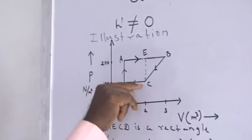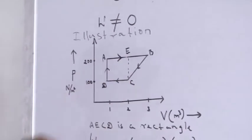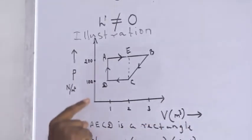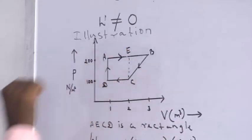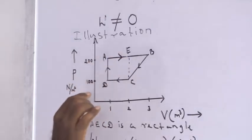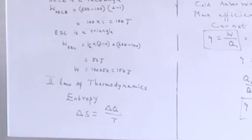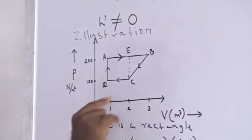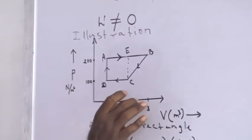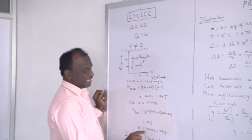I can identify that the path carried by this thermodynamic process forms a rectangle A-E-C-D and a triangle E-B-C. The area under A-E-C-D is a rectangle, so the work done equals length × breadth: (200 − 100) × (2 − 1) equal to 100 Joules. For triangle E-B-C, the area is half × base × height: half × (3 − 2) × (200 − 100) equal to 50 Joules. Therefore, the total work done is 100 plus 50 equal to 150 Joules. This is how we calculate the work done using a cyclic process.